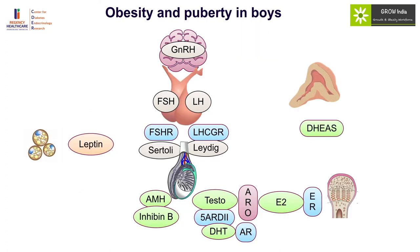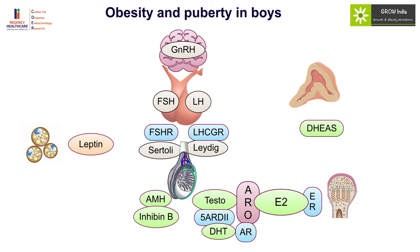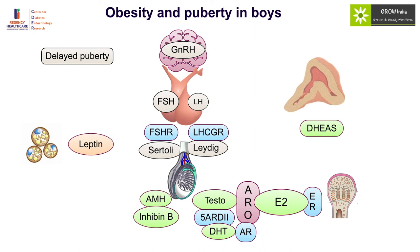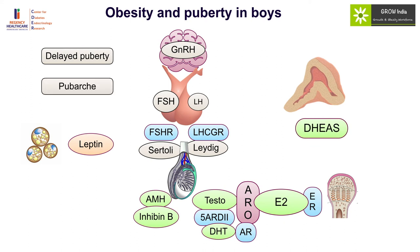In boys, the effect is largely through increased aromatization and production of estrogen, which inhibits LH secretion — and therefore obesity is associated with delayed puberty. Importantly, because adrenarche is actually enhanced in obesity, these individuals will have normal pubarchy. Therefore, delayed puberty with normal pubarchy is the hallmark of obesity-related pubertal disruption in boys.